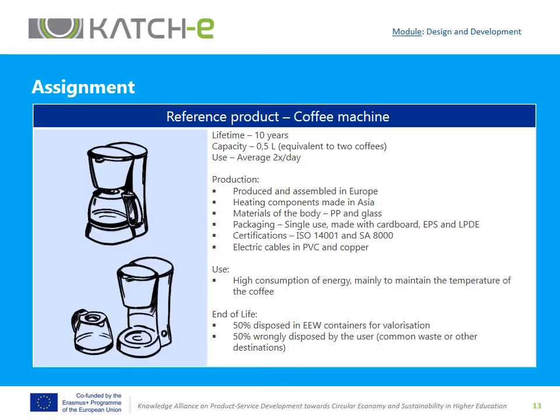The example is a coffee machine with a lifetime of 10 years, a capacity of half a liter, and a use pattern of twice a day. It is produced and assembled in Europe; the heating components are made in Asia. The materials of the body are PP and glass. It has single-use packaging made with cardboard, EPS, and LDPE. The suppliers are ISO 14001 and SA8000 certified, for environmental management systems and social accountability.